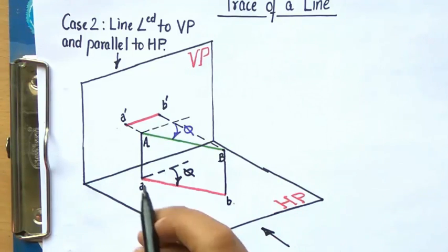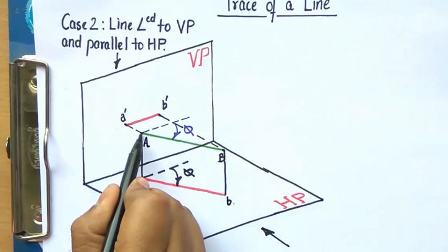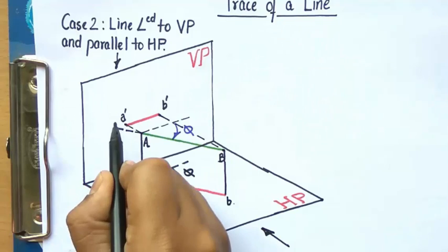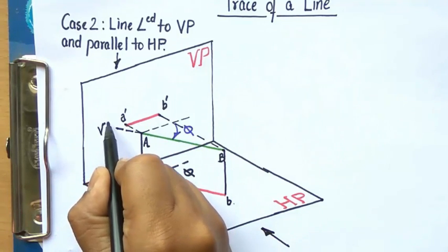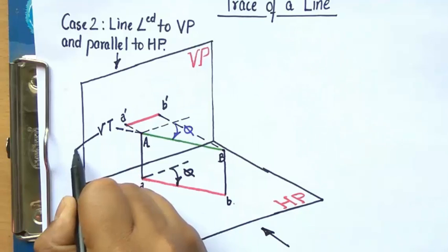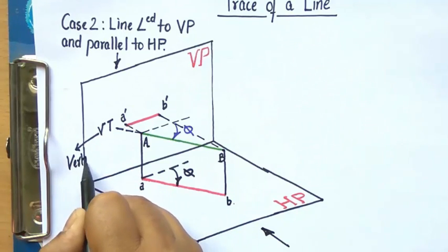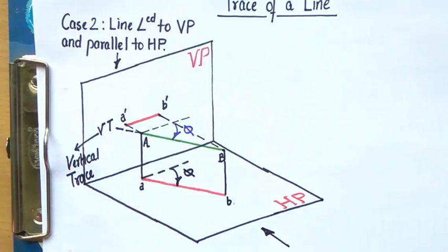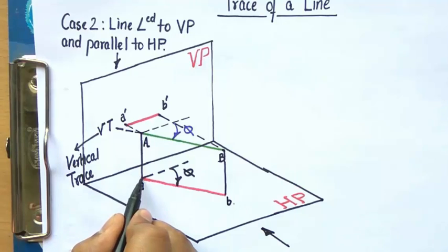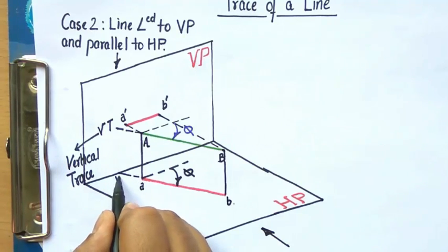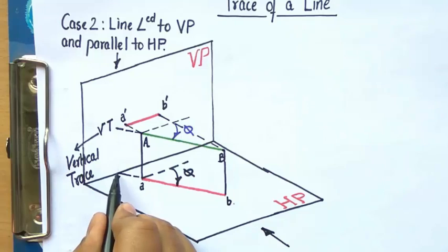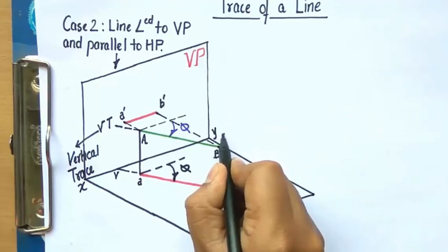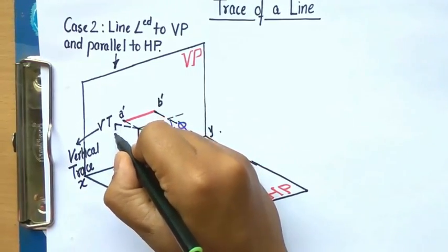We are interested in locating the trace — specifically the vertical trace. Producing this line from point A, it is going to end up cutting the vertical plane somewhere here, and this is what you call the vertical trace. You can also extend to get point V, which is exactly the point where the top view intersects the reference XY line. You can join these points.